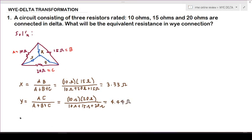Now we go to Z. Z equals the product of the adjacent resistances B and C, so B times C over A plus B plus C.